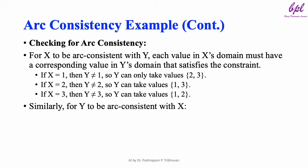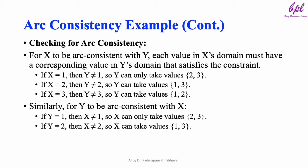Similarly, for Y to be Arc-Consistent with X, if Y equals 1, then X is not equal to 1, X can only take values 2, 3. If Y equals 2, then X is not equal to 2, so X can take values 1, 3. If Y equals 3, then X is not equal to 3, so X can take values 1, 2.